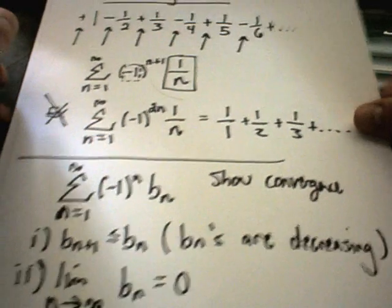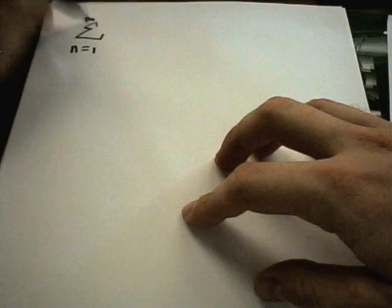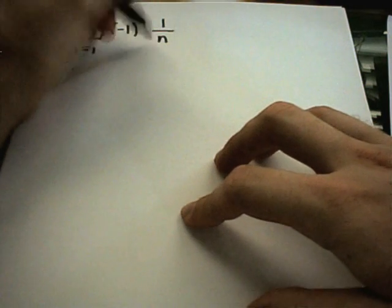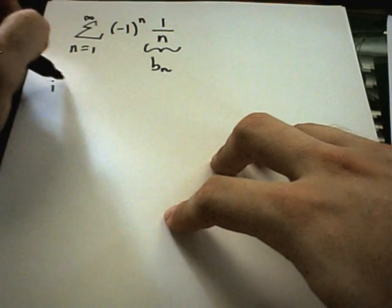So a very simple example of this. Let's look at the example we started with. n equals 1 to infinity, negative 1 to the n of 1 over n. Well, this is my b sub n.